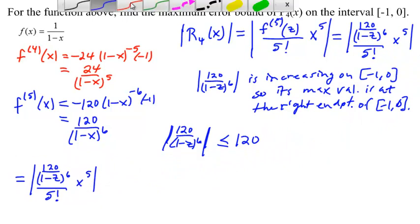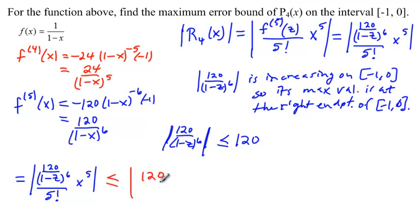And, now what we can do is show that that is less than or equal to, replacing that whole thing with just 120, over 5 factorial, which happens to be 120 as well, x to the 5th.